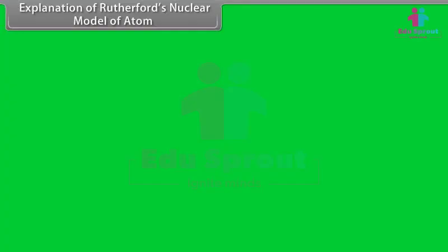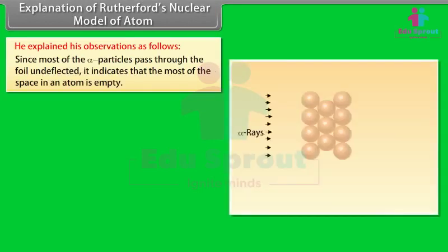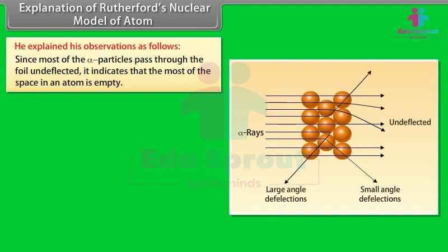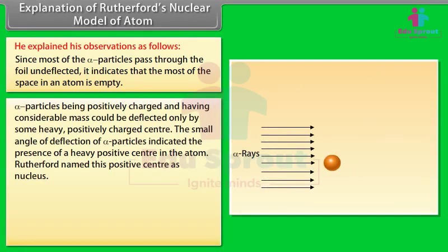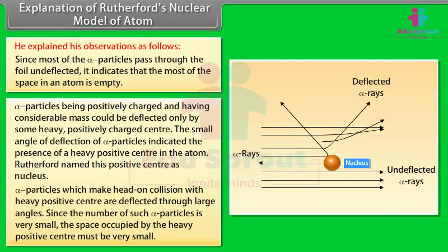Rutherford explained his observations as follows: Since most alpha particles pass through undeflected, most of the space in an atom is empty. Alpha particles, being positively charged and having considerable mass, could only be deflected by a heavy positively charged center — named the nucleus. Alpha particles making head-on collision with the heavy positive center are deflected through large angles; since the number of such particles is very small, the space occupied by the nucleus must be very small.